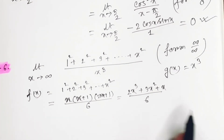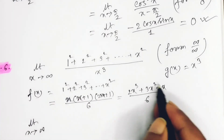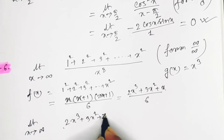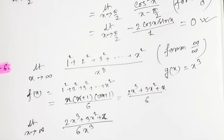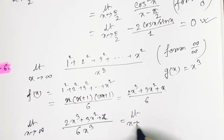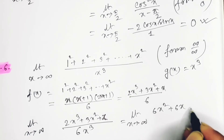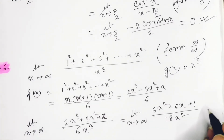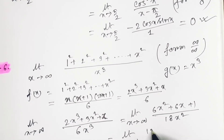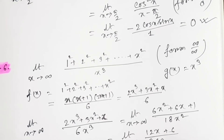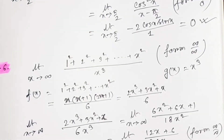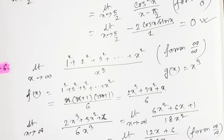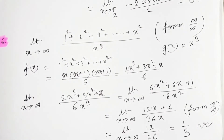Next example: limit x → ∞ of (2x³ + 3x² + x)/6 divided by x³, which simplifies to (2x³ + 3x² + 6 + x)/(6x³). Taking derivative: (6x² + 6x + 1)/(18x²) — still ∞/∞. Differentiate again: (12x + 6)/(36x) — still ∞/∞. One more differentiation: 12/36 = 1/3. So the limiting value is 1/3.